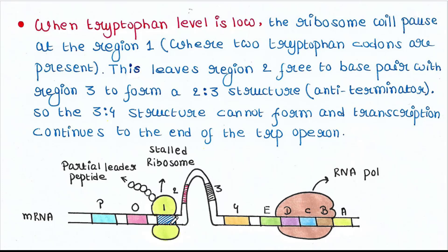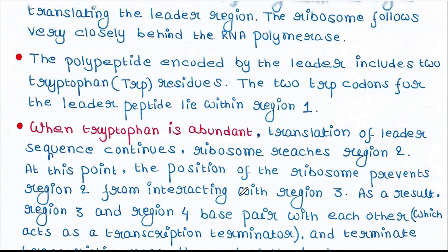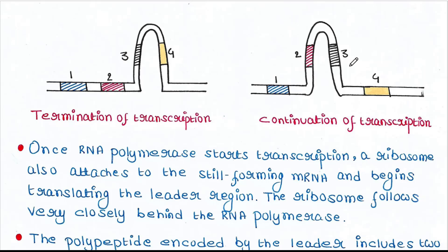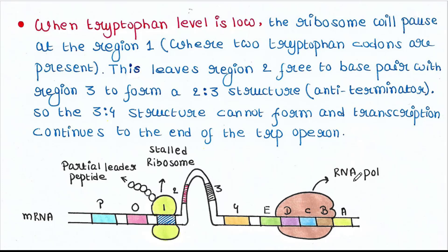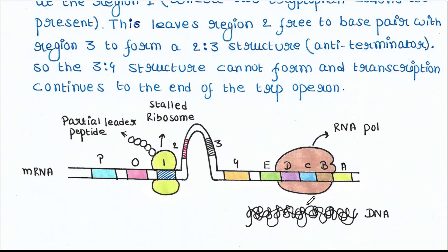The ribosome waiting for tryptophan amino acids leaves region 2 and region 3 free. So region 2 and region 3 base pair, forming the 2-3 structure. We know that if regions 2 and 3 base pair, transcription continues. The transcription proceeds to the end of the trp operon and we get a full-length mRNA. So this is the concept of attenuation.